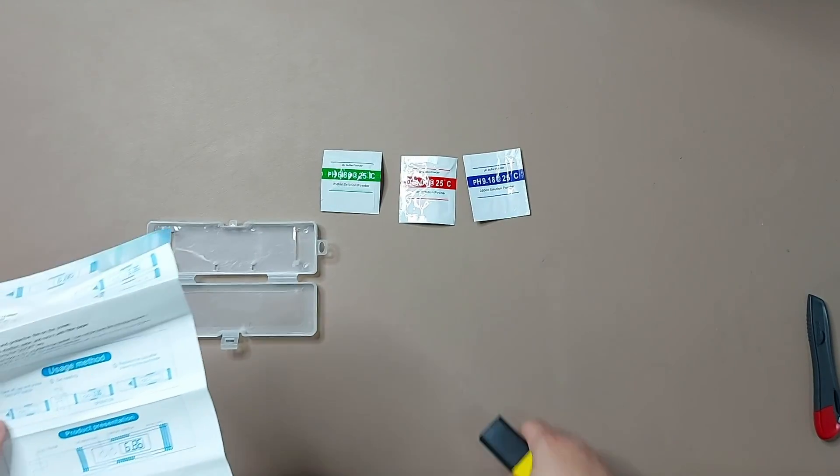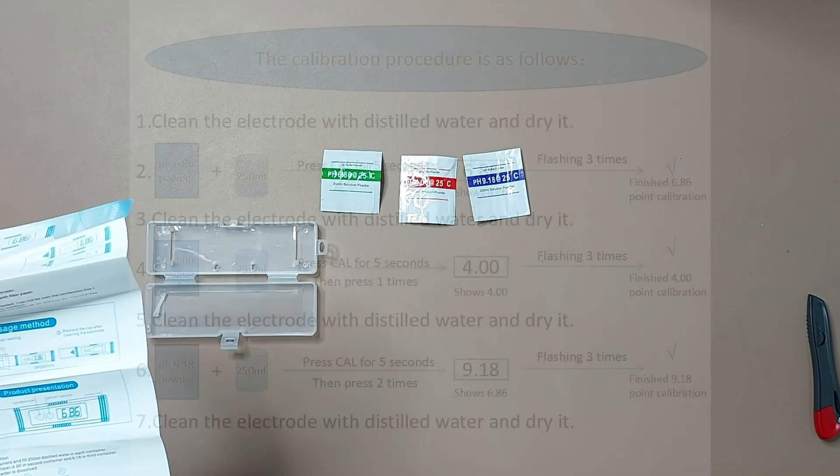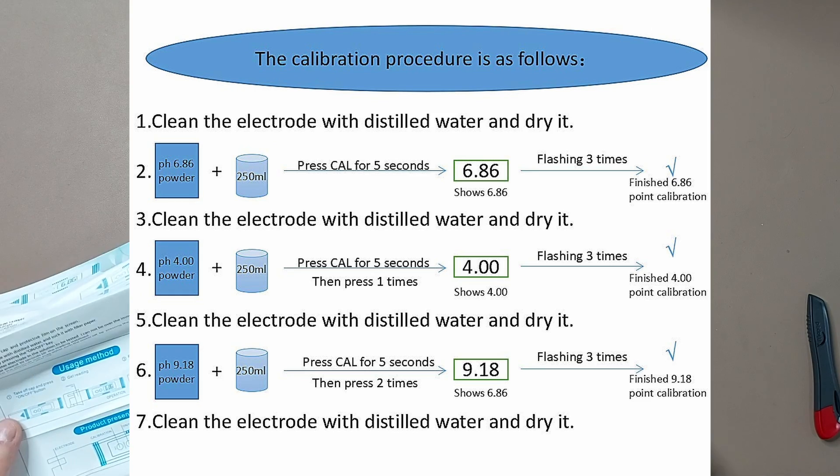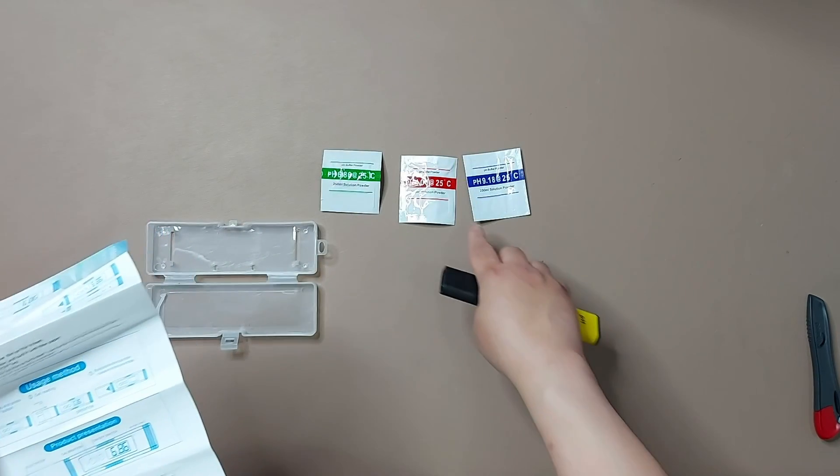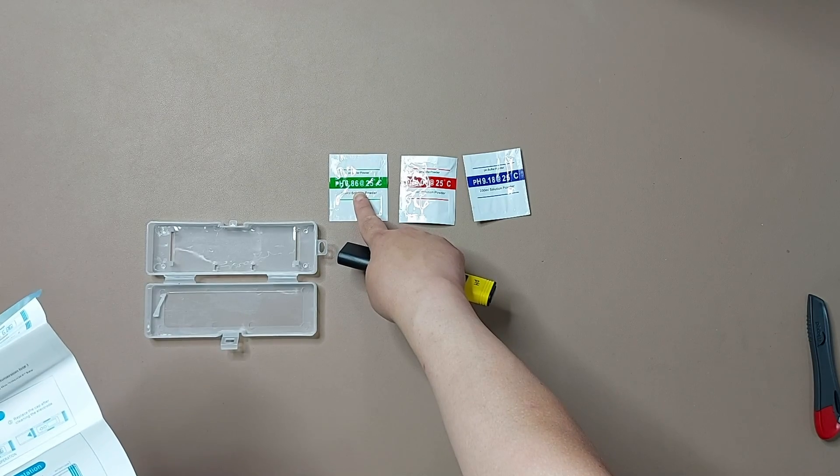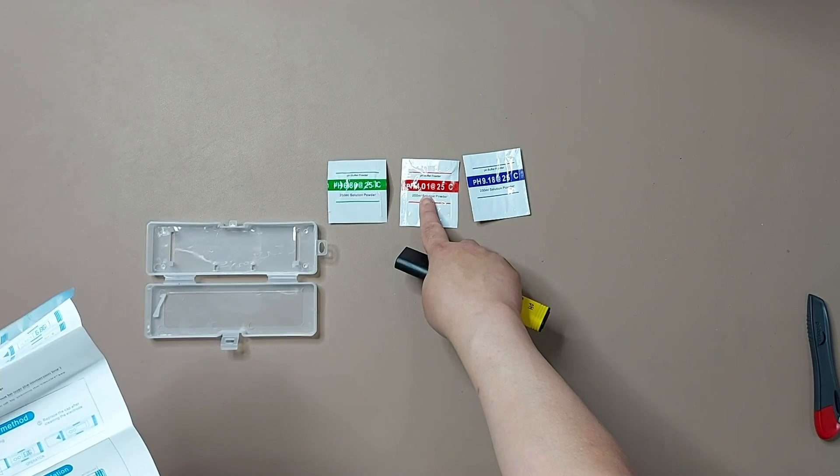Find three clean containers, fill with 250ml distilled water. Empty the pH 6.86 powder in the first container, the pH 4.0 in the second container, and the pH 9.18 in the third container.